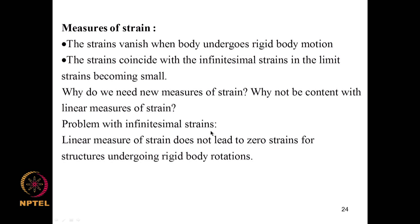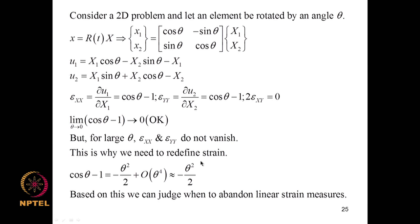The problem with infinitesimal strains is that the linear measure of strain does not yield zero strains for structures undergoing rigid body rotations. Consider a 2D element rotated by angle θ — a rigid body rotation. The deformation is x1 = cosθ X1 − sinθ X2, x2 = sinθ X1 + cosθ X2. For any value of θ we expect zero strains, but the infinitesimal strain components εXX = cosθ − 1 and εYY = cosθ − 1 are not zero.